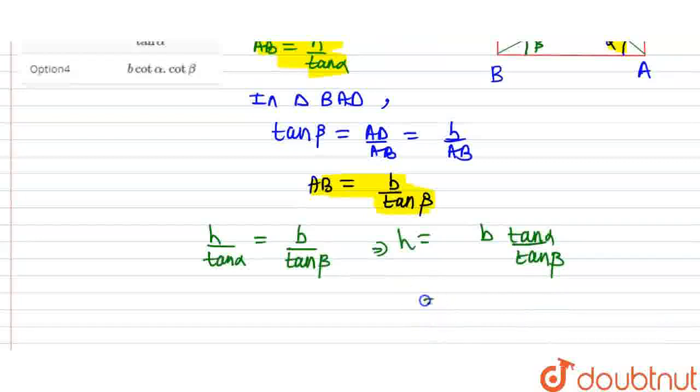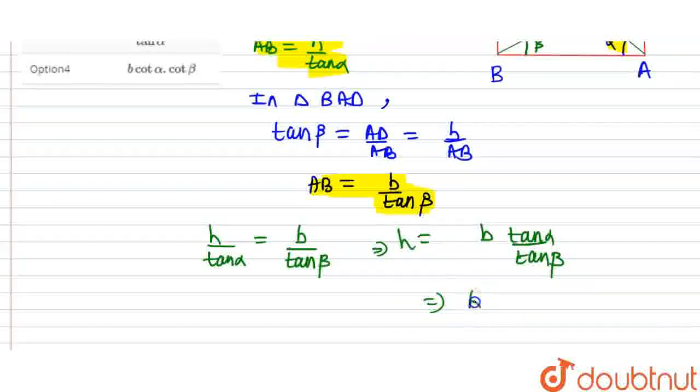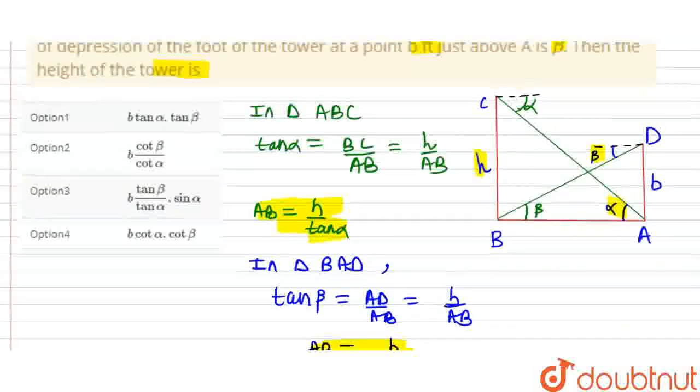And now we know what is cot theta. One over tan theta. So we can write B times cot alpha upon cot beta, which simplifies to B times cot beta upon cot alpha. This is our height value. So if you match the option.